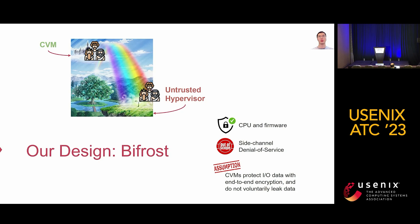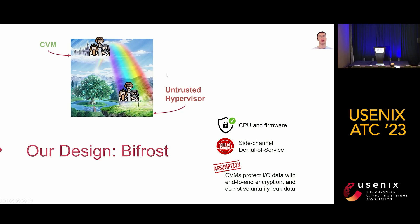To reduce the CVM IO tax and improve network performance, we propose BFrost for CVMs. BFrost is a rainbow bridge from Norse mythology, metaphorically representing the secure and rapid IO data transfer between the CVM and untrusted hypervisor. We share the same threat model with existing CVMs. The TCB only consists of CPU hardware and firmware. Side-channel attacks and denial-of-service attacks are out of scope. We also assume that CVMs protect IO data with end-to-end encryption and do not voluntarily leak data.